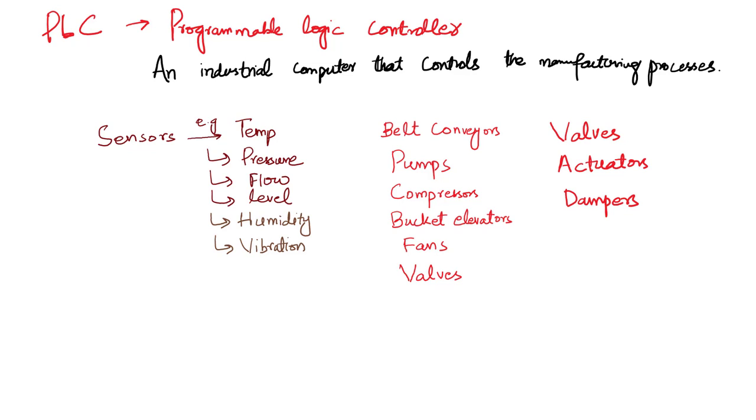PLC is the acronym of Programmable Logic Controller, and it is an industrial computer that controls the manufacturing process. Manufacturing processes like food and beverages, pharmaceuticals, cement, oil and gas, and automobile manufacturing all require PLC as its core component.